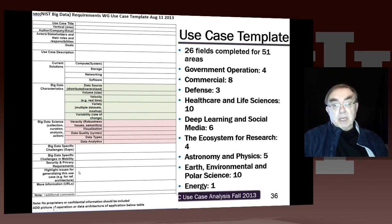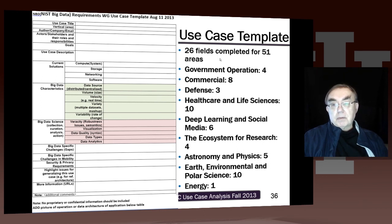Then any comments on special features, some URLs, and a final free-field comment. So we have 26 fields and 51 completed surveys. We divide them into broad areas: four in government operations, eight in commercial use cases, three in defense, and ten in healthcare and life sciences.